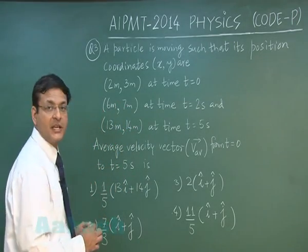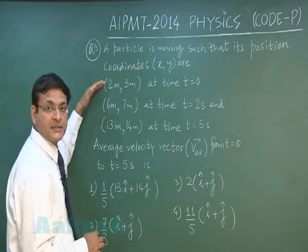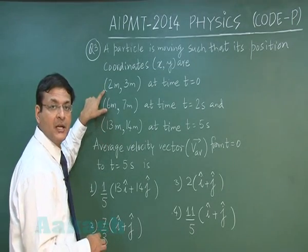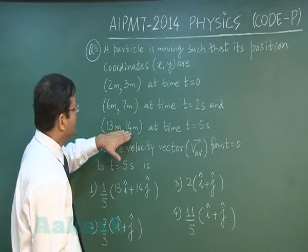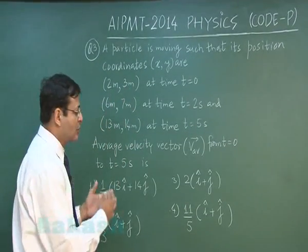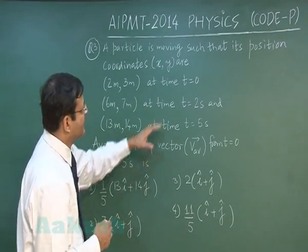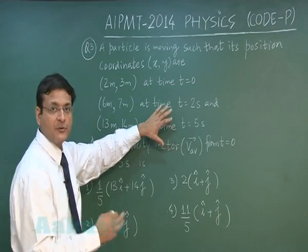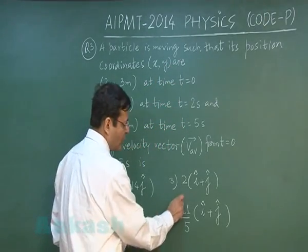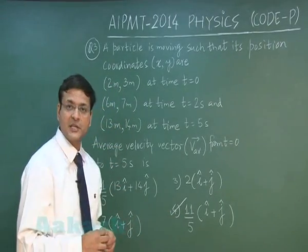For average velocity, take final minus initial coordinates. On the x-axis: 13 m − 2 m = 11 m, and on the y-axis: 14 m − 3 m = 11 m. So 11 m in the i-direction and 11 m in the j-direction, divided by 5 seconds. The most appropriate option is the fourth option, which is the answer to question number 3.